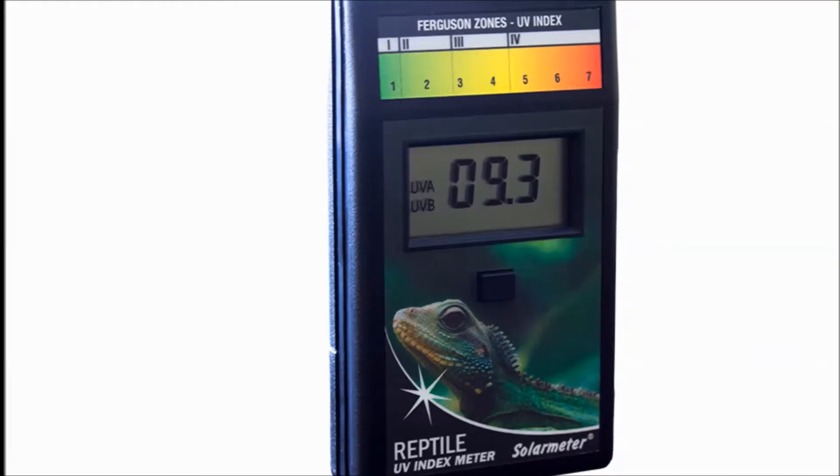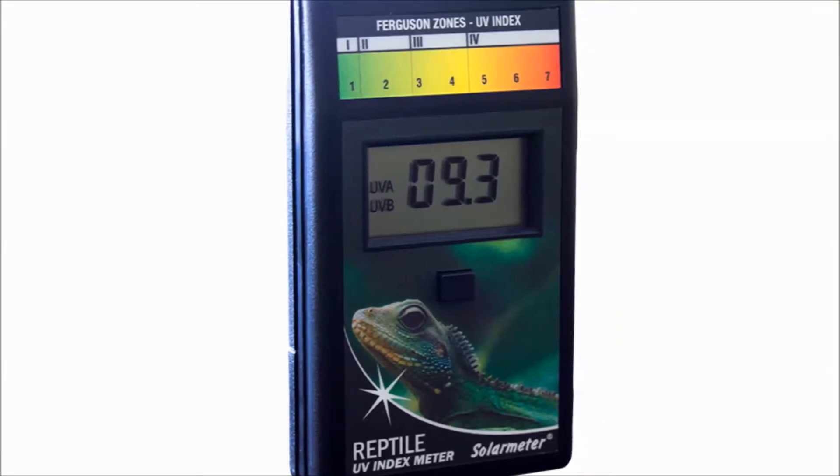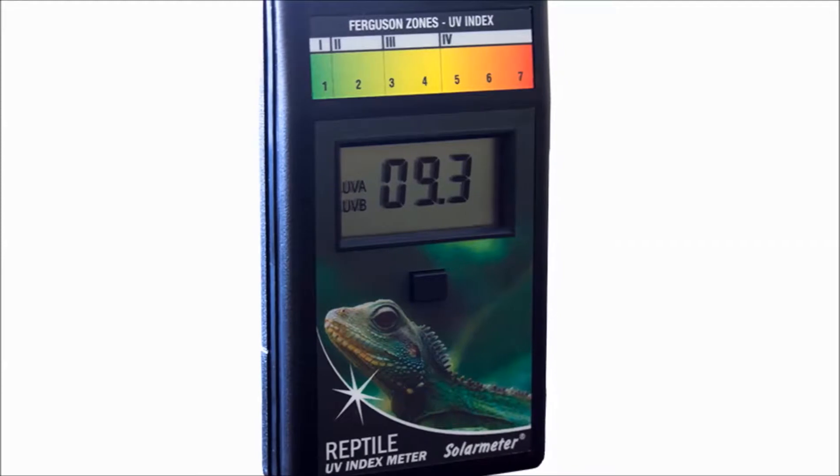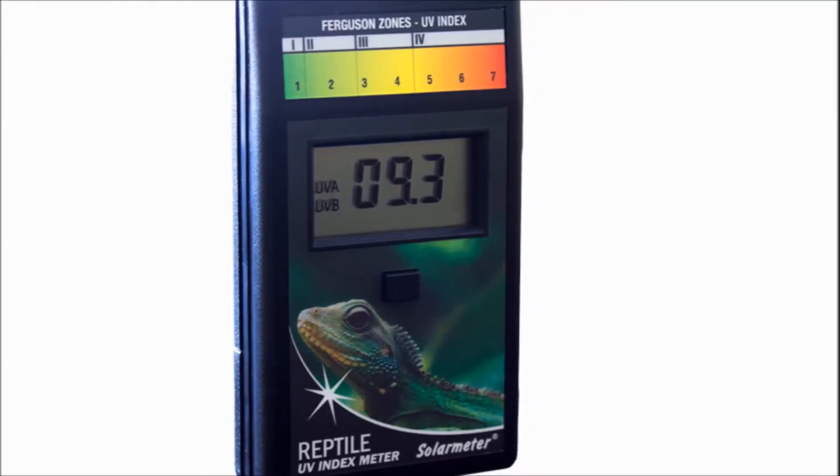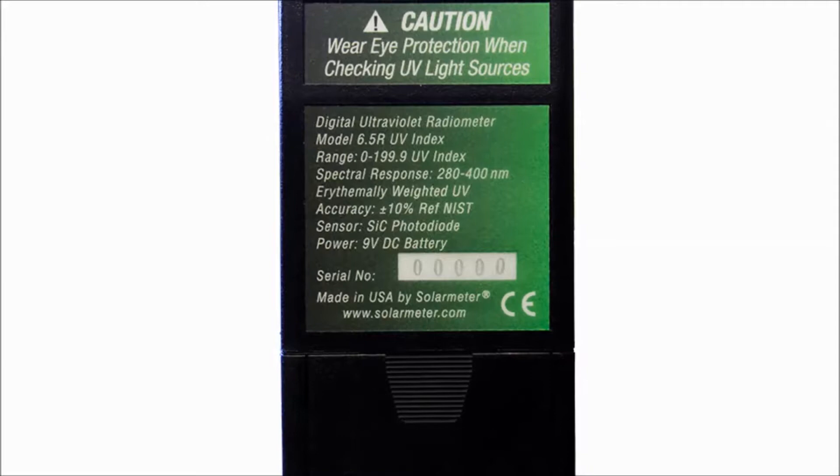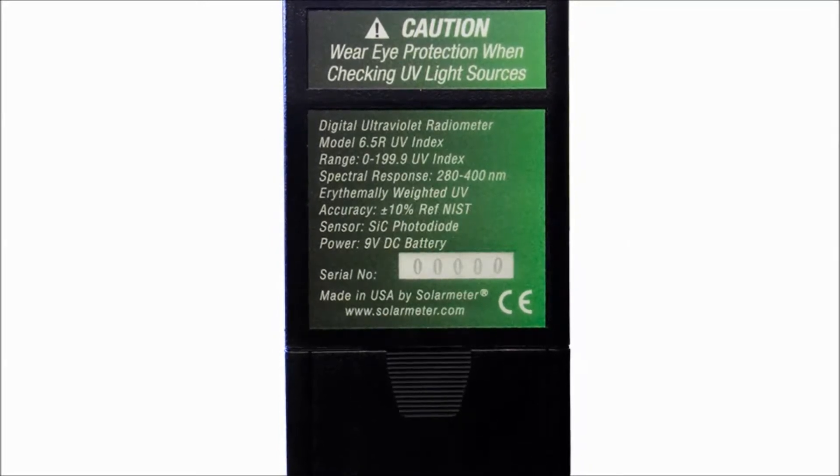As before, the handheld model's rugged plastic case is palm-sized for effortless portability, measuring a compact 4.2 inches long by 2.4 inches wide by 0.9 inches deep and weighing only 4.5 ounces, including the 9-volt battery.